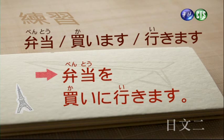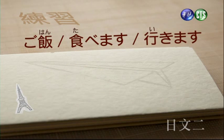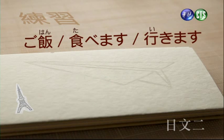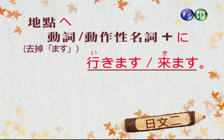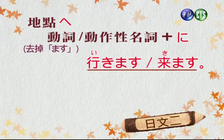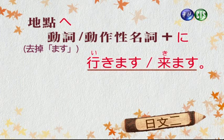本を返しに行きます（去還書）。弁当、買います、行きます，會變成：弁当を買いに行きます（去買便當）。御飯、食べます、行きます，會變成：御飯を食べに行きます（去吃飯）。那麼我們來看這個句型，加上一個場所，再加上動作目的的に。